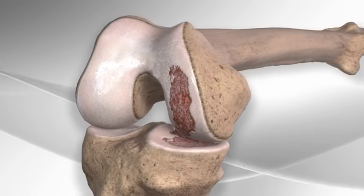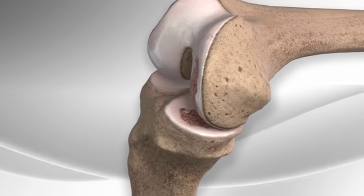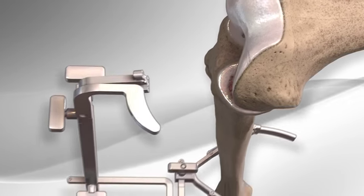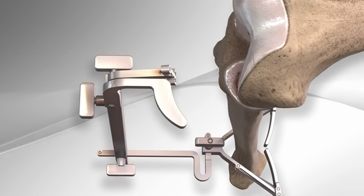After your surgeon makes a small incision over the front of the knee, a guide is secured to the tibia and used to determine how much of the tibia to remove.